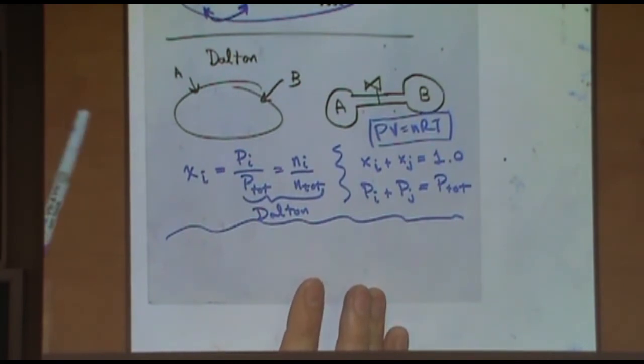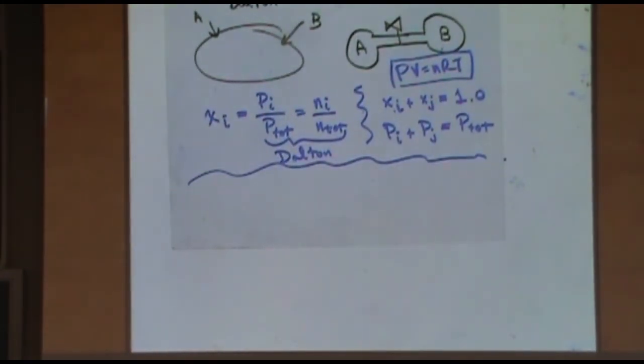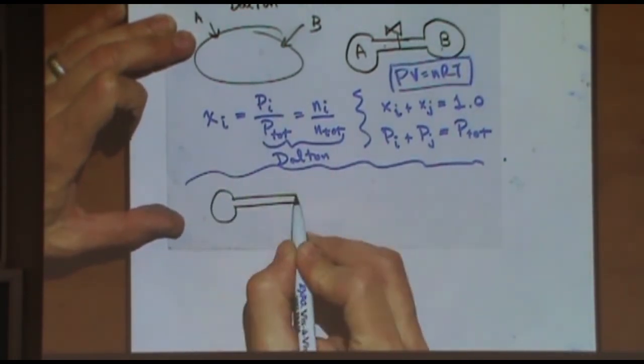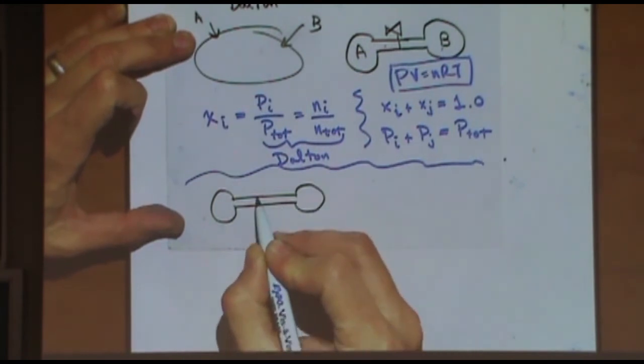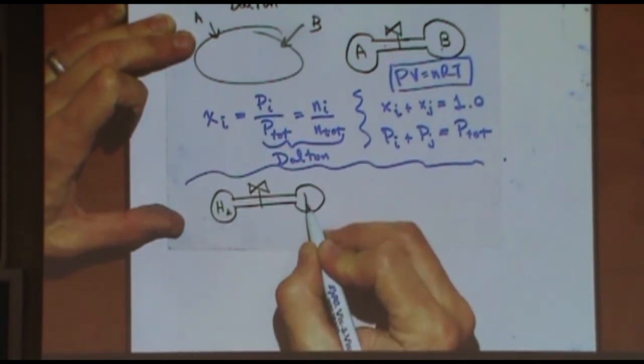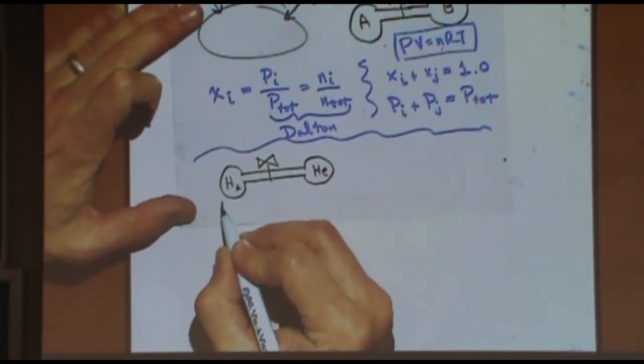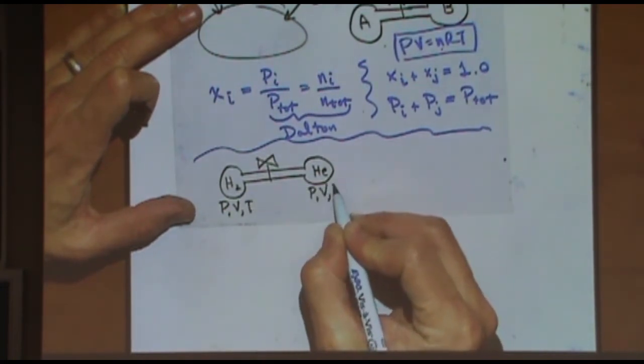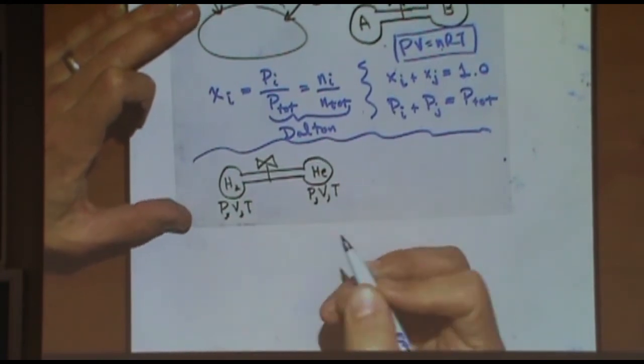What's j? Another gas. So, what's j or i? They represent different gases. Gas i, gas j, gas k, etc. So, let's say we're taking the second example. Let's say we've got hydrogen and helium. Let's say you know the pressure, volume, and temperature here, and the pressure, volume, and temperature there.